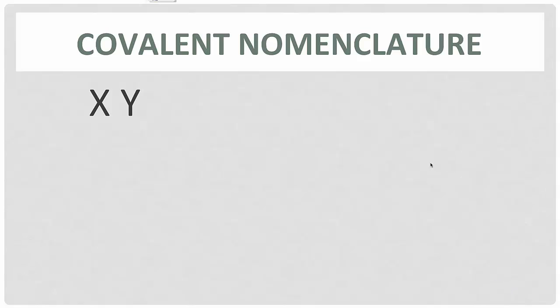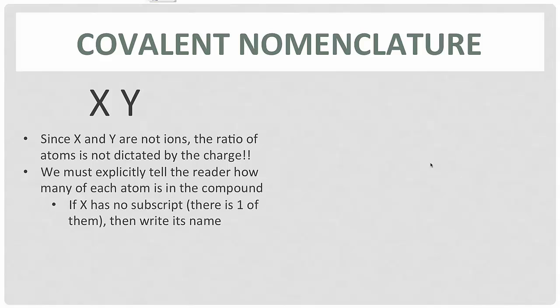Okay, so let's move on to naming our covalent compounds. In this case, X and Y are not ions, and since they're not ions, we can't use their charges to distinguish what the formula will be. So what happens is you have to actually count for people, tell them exactly how many there are of each kind. And the reason is these nonmetals can make different ratios and be stable. For example, nitrogen and oxygen make a whole bunch of compounds—they make NO, they make NO₂, they make N₂O, they make N₂O₄, they make N₂O₅. I'm sure I've missed a few.